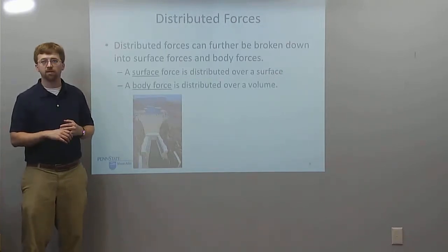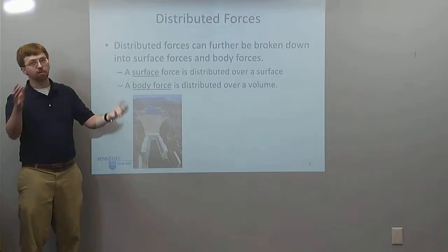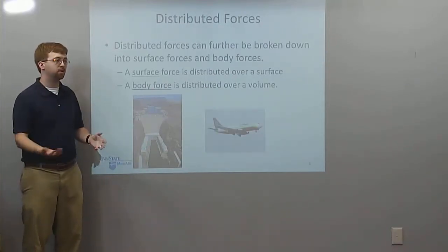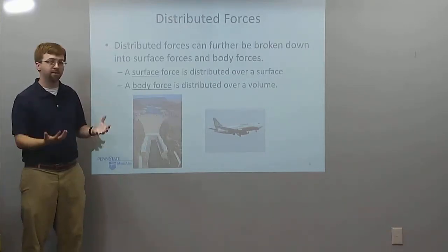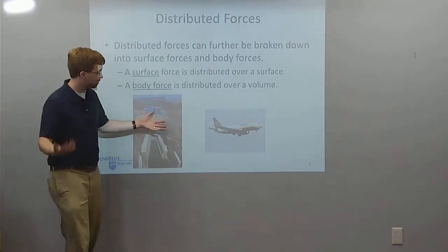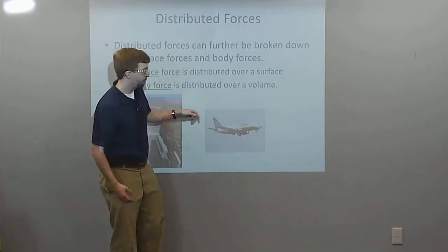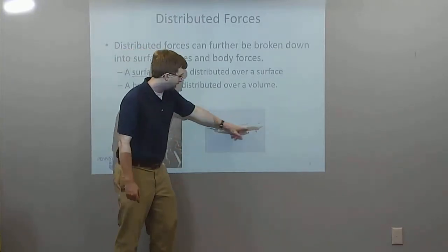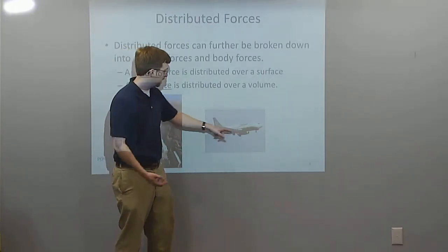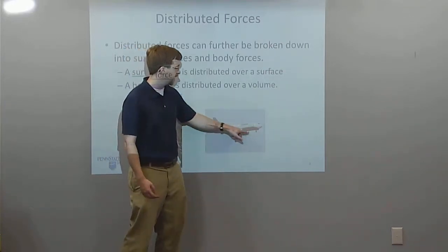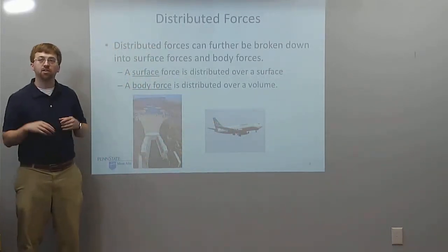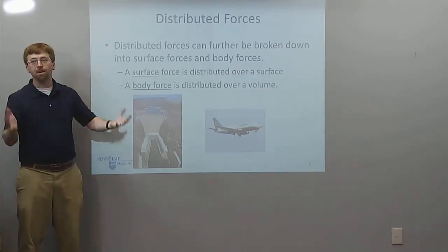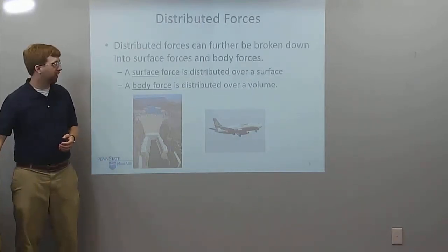A body force is distributed over a volume — over every little bit of the body, which is where that name comes from. The most common example is gravity or gravitational forces. Here we've got a plane, and gravity is pulling down on every little bit of it — on the body of the plane, the wings, the engines. On every little piece of this plane, there is some small gravitational force distributed over the entire body.